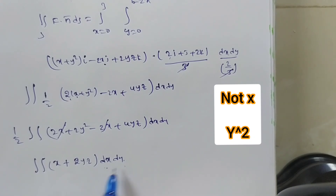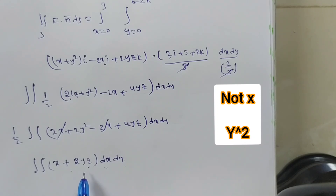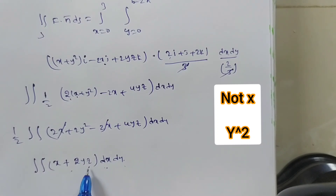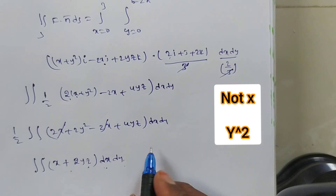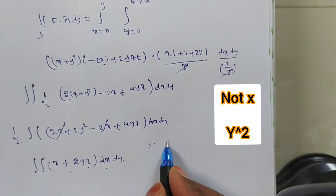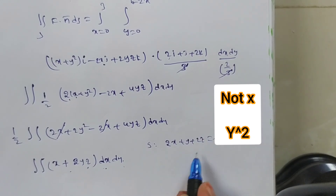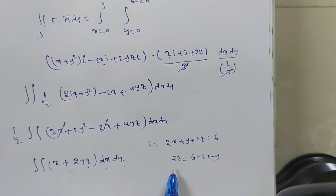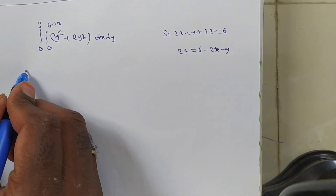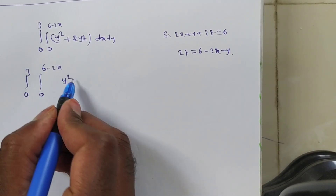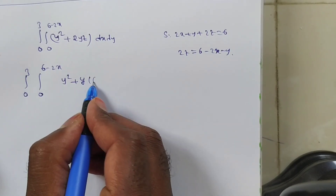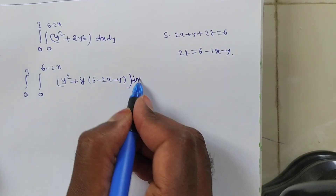We are doing double integration with respect to x and y, but the integrand has a z term. Do not substitute z = 0 here — that is only for finding limits. Since we are on the xy plane, convert z using the given surface: 2x + y + 2z = 6, so 2z = 6 − 2x − y.